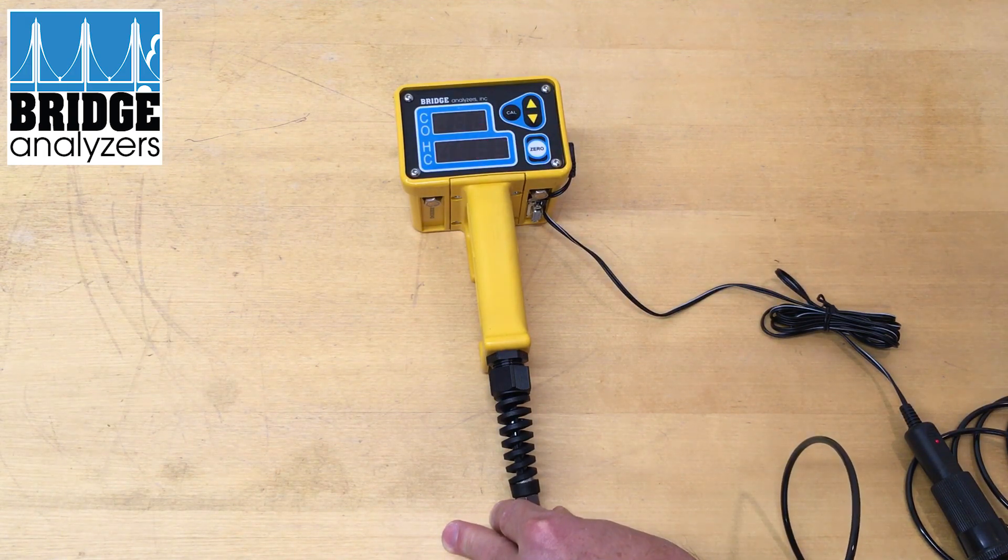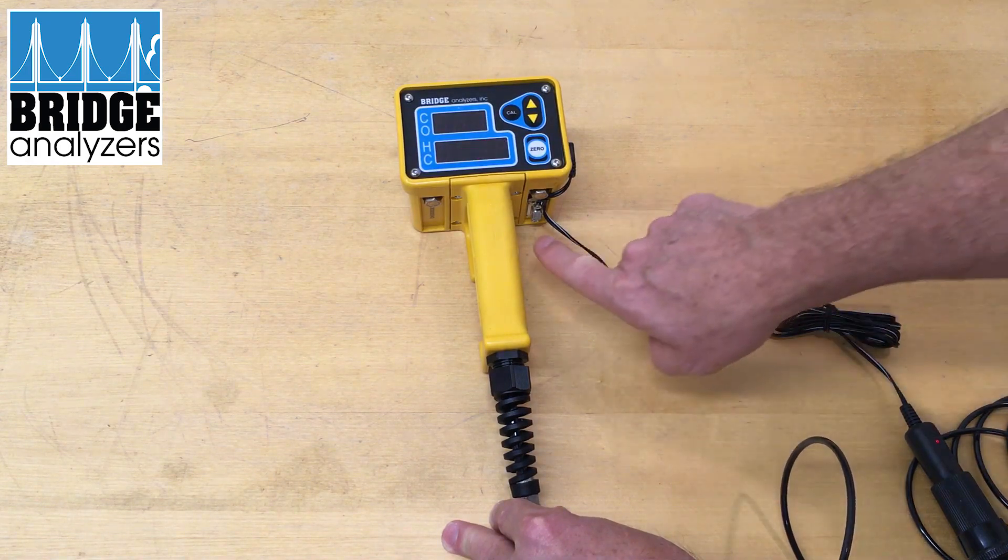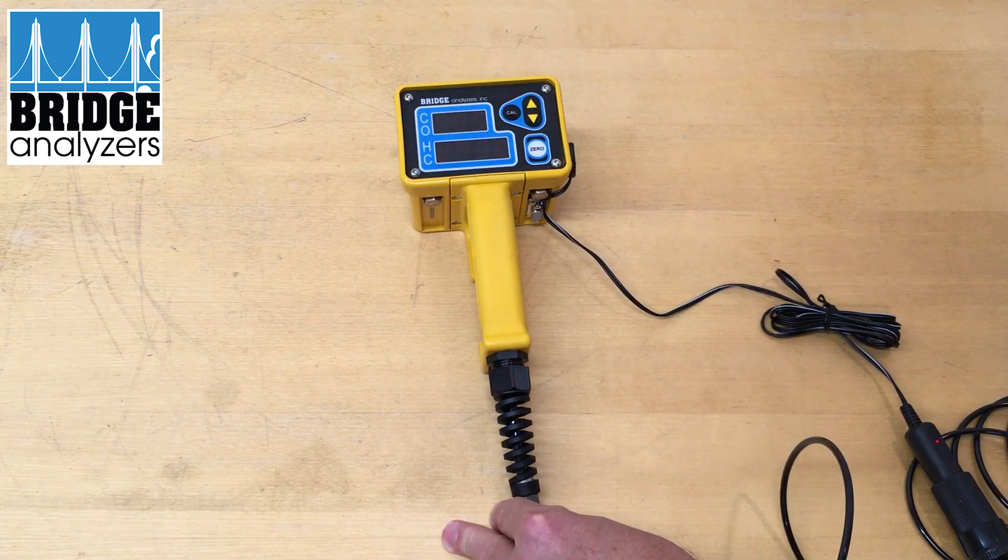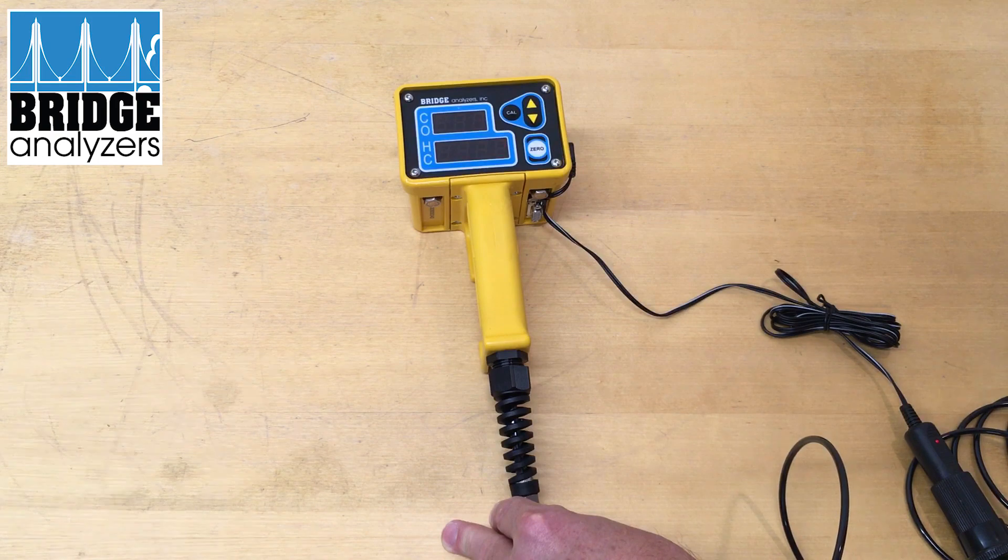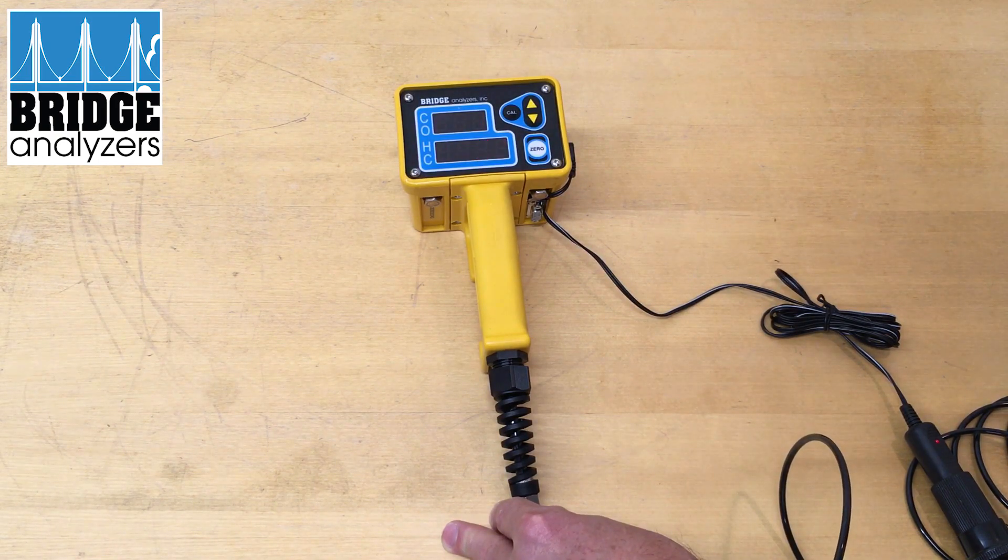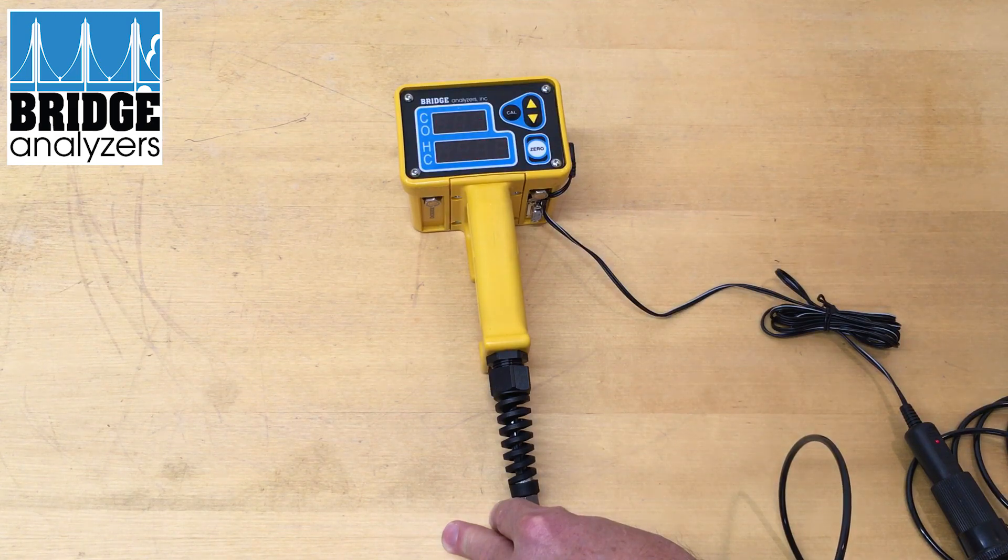Also the pump begins to run. At this point the analyzer is zeroing through a port on the side of the analyzer. It's not going through the probe and it's testing ambient air to zero the optics and system.